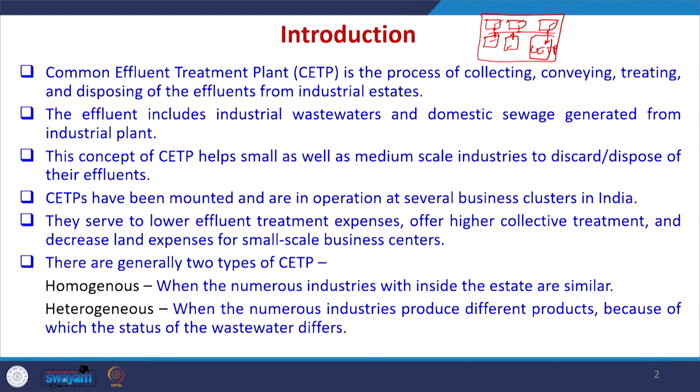We may have some special economic zone where a number of industries are located. In the common effluent treatment plant, member industries treat the wastewater up to a certain level and then discharge to a common line which goes to the CETP. These industries may be the same in nature or different in nature. They do some primary treatment depending upon the type of wastewater discharged and then it goes to CETP. The advantage is that they do not have to incur high cost for treatment and do not require the space needed for installing all the treatment plant units. That is why common effluent treatment plants are always used and preferred.